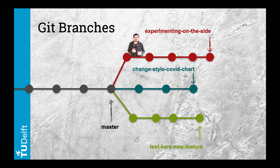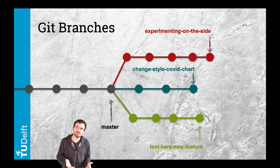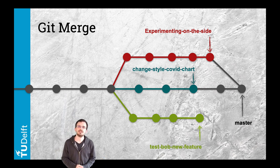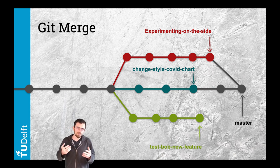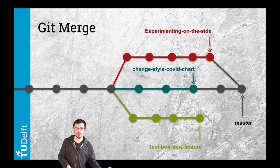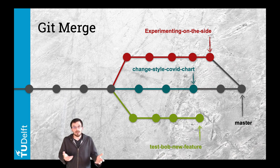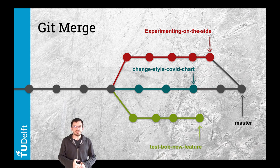You might also have some experiments on the side that you can only dedicate a couple of hours a week to. When done with a task, you merge it with the master branch, bringing it all together. You might do another merge when you are happy with a side experiment. When we merge, we combine two versions of the code — it creates a new commit, a snapshot that includes the changes of both branches. Note that some changes might be conflicting; for example, the same line of code might be edited in both versions, so you get to decide what to keep and what to discard.